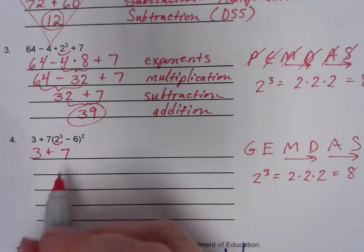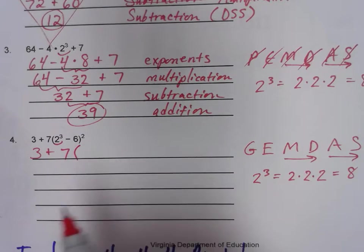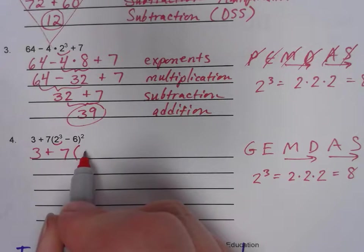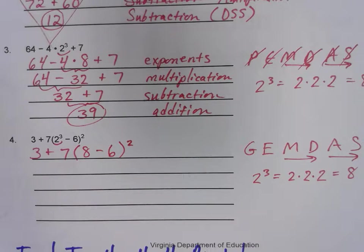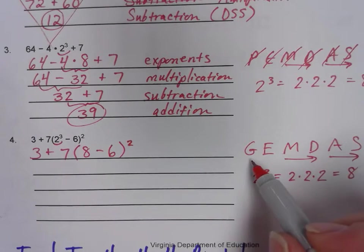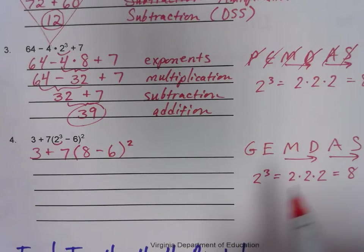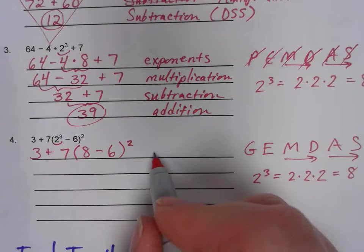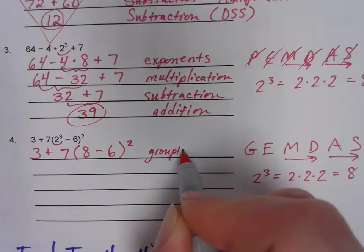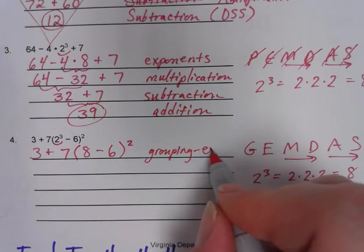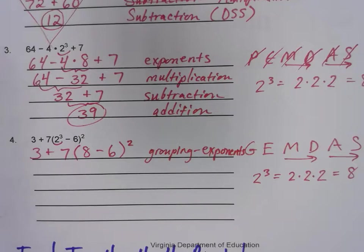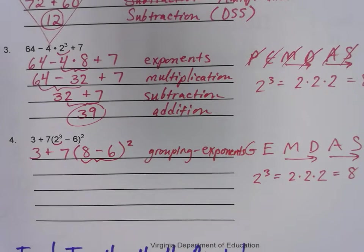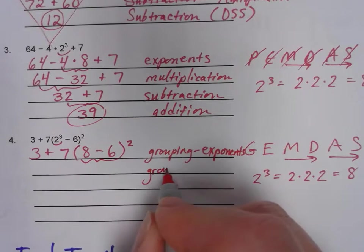Let's do a rewrite: everything stays the same, but inside the parentheses I simplify two to the third as eight take away six, and that whole quantity is squared. Am I done with the grouping symbols yet? No — there's more grouping to be done. The first thing we did was grouping, and within the grouping we used exponents. The next thing to take care of inside the parentheses is a subtraction — so it's grouping again, specifically subtraction.